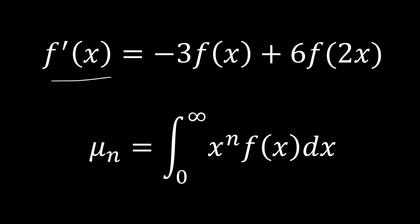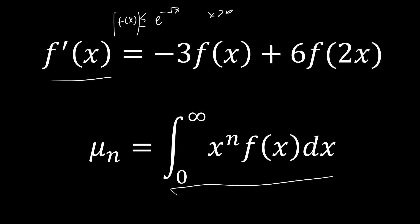Essentially we're talking about this function which we know is bounded from above: the absolute value of f(x) is less than or equal to e to the negative square root of x, for x greater than zero. So we know that this integral is always going to converge, and we're dealing with this sequence here. The first thing we're told to do in part one of the problem is just to find an expression for the sequence in terms of μ₀.